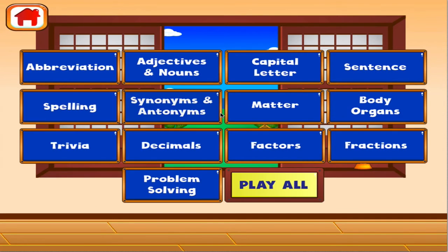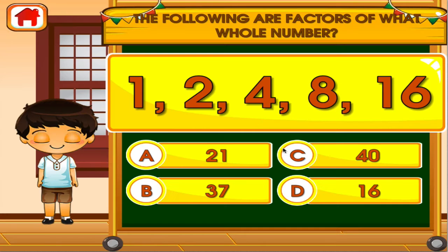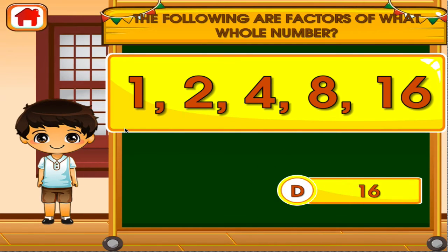Choose the activity you want to play. Factors. Tap the correct answer. Woohoo! Good job! You got it right!